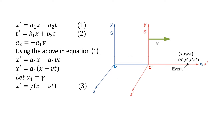Substituting A2 equals minus A1·V into equation 1, we get X prime equals A1·X minus A1·V·T, which simplifies to X prime equals A1·(X minus V·T). Usually the symbol gamma is used in place of A1, so we get X prime equals gamma·(X minus V·T).